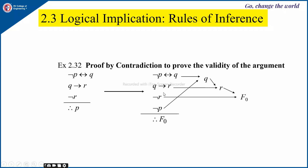Since Q is true, Q implies R must be true, which implies R has to be true. But R is true and not of R is also true, which implies it is false. Therefore, we have derived false, which indicates our proof of validity of the argument by contradiction is correct.